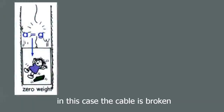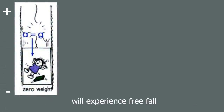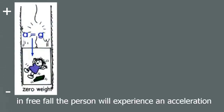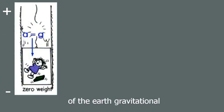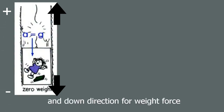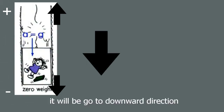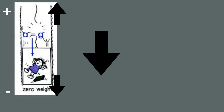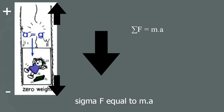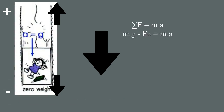In this case, the cable is broken, so the elevator and the person inside will experience free fall. In free fall, the person experiences an acceleration equal to Earth's gravitational acceleration. We draw the forces: normal force upward and weight force downward. Since the person is in free fall, the motion is downward, and sigma F equals ma, giving weight force minus normal force equals ma.